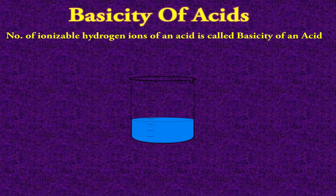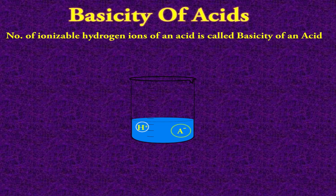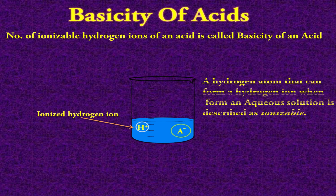For example, the general representation of any acid is HA. Whenever this acid is dissolved in water to make an aqueous solution, it breaks down into its ions: H⁺ ion, which is called the hydrogen ion, and a negative ion. This hydrogen ion is known as the ionized hydrogen ion, and it will give you the basicity of any acid.